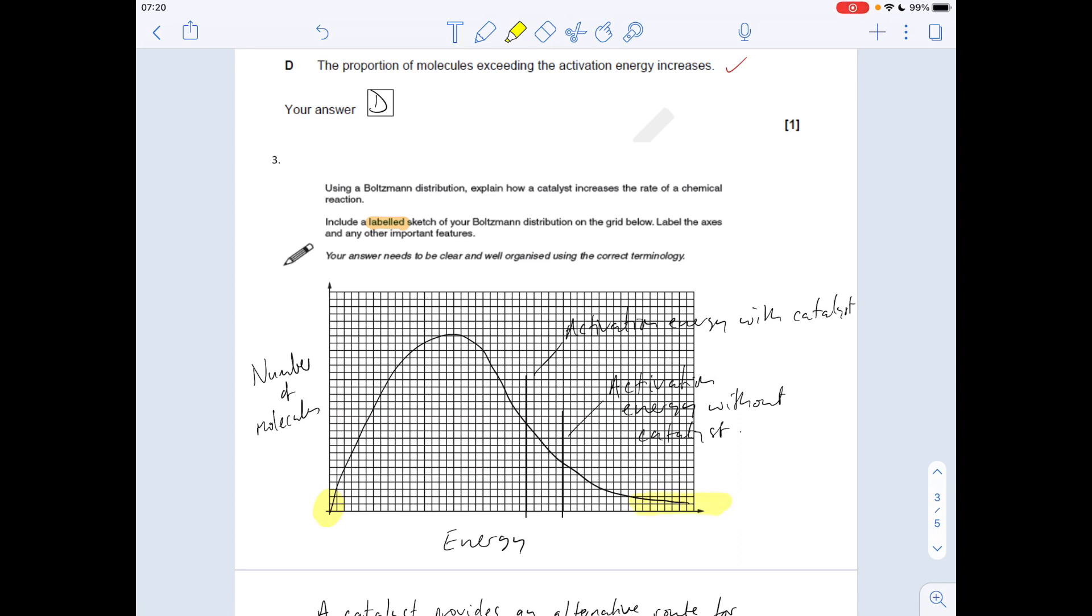Your curve mustn't touch the x-axis. You've got to sort of flatten it off—asymptote is the word. It must not look like it's going to hit that x-axis. The reason for that: if you cut the x-axis, what you're saying is that's the absolute maximum energy a particle can have, and you're ruling out the chance that one single particle could have slightly more energy. That's why you mustn't do that. The other labels would be the activation energy without the catalyst, and then a line to the left of that labeled as the activation energy with the catalyst.